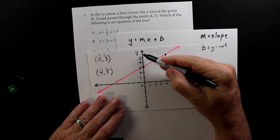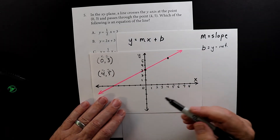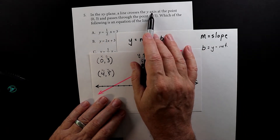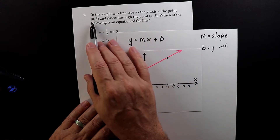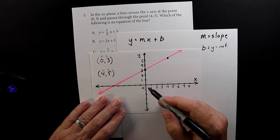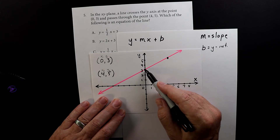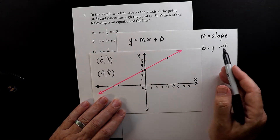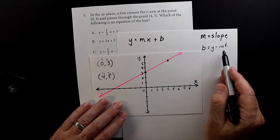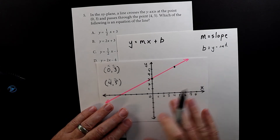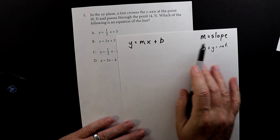This is your y-axis. Your y-intercept is where the line crosses the y-axis. Here it crosses at (0, 3), so we know the y-intercept is 3. We'll come back to that later. The next thing we're going to focus on is how to find the slope.